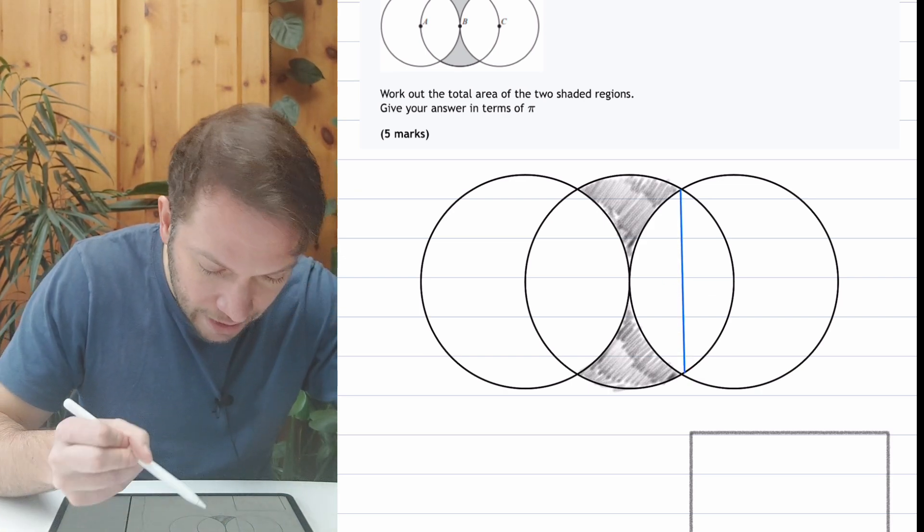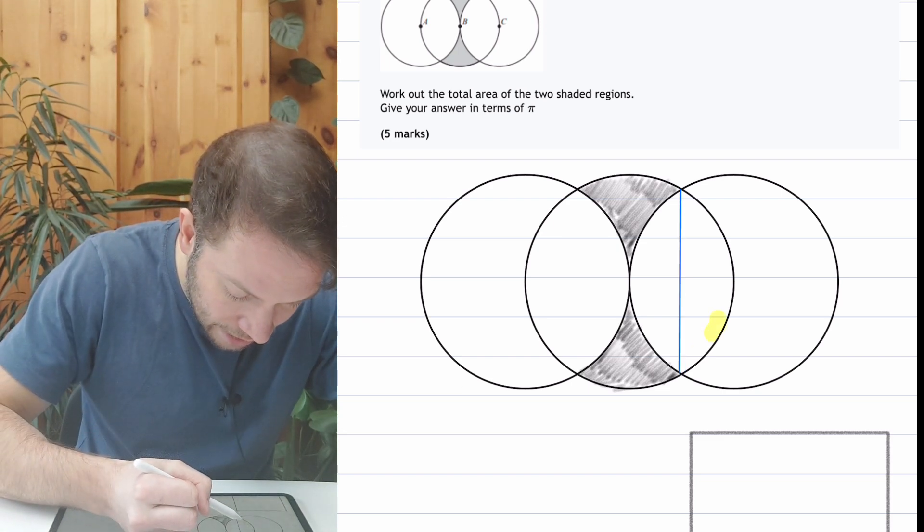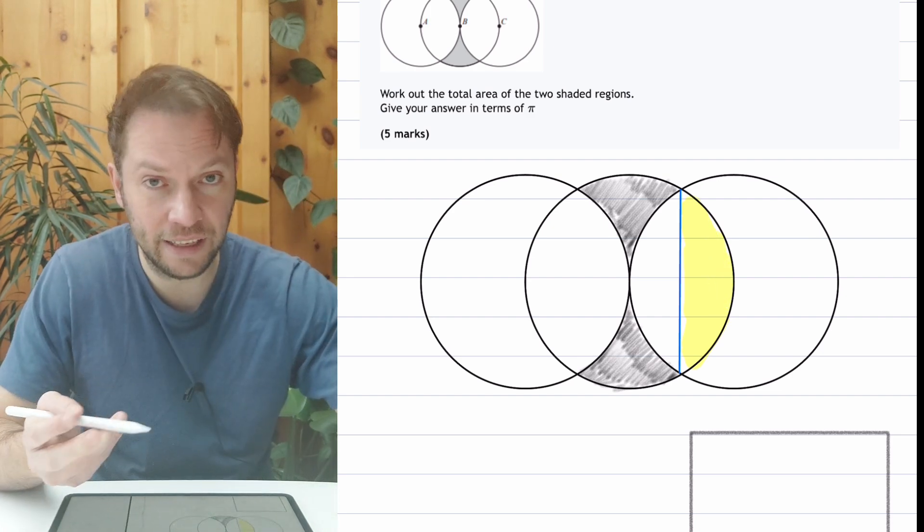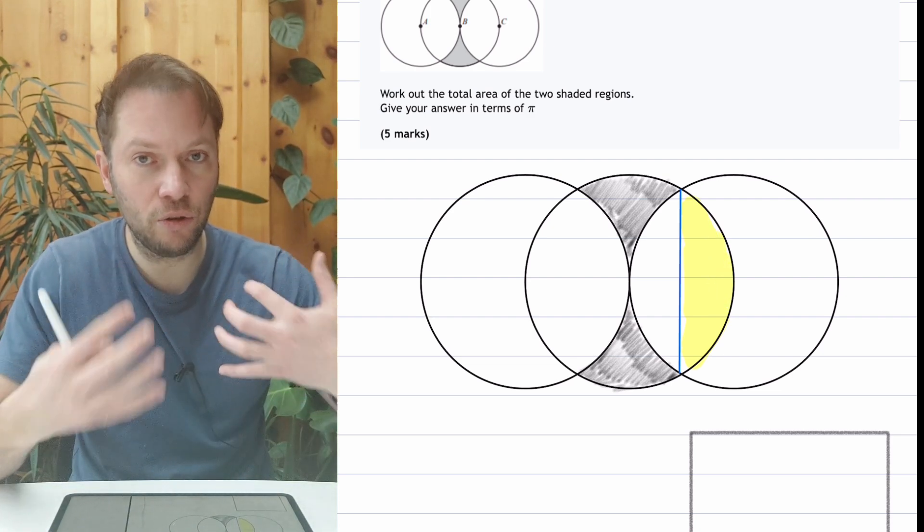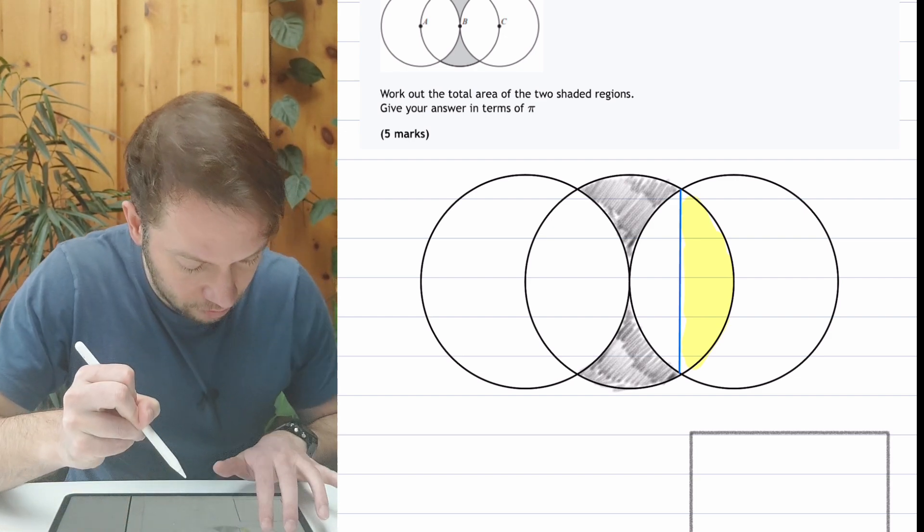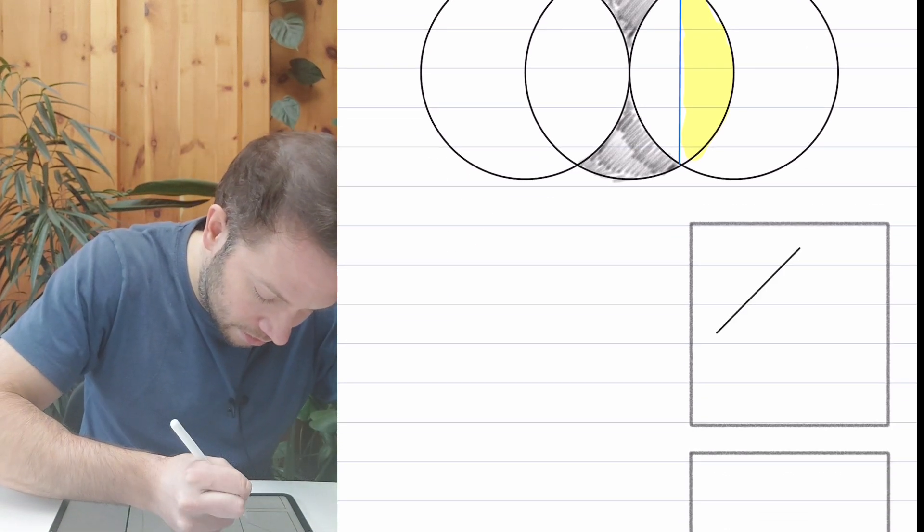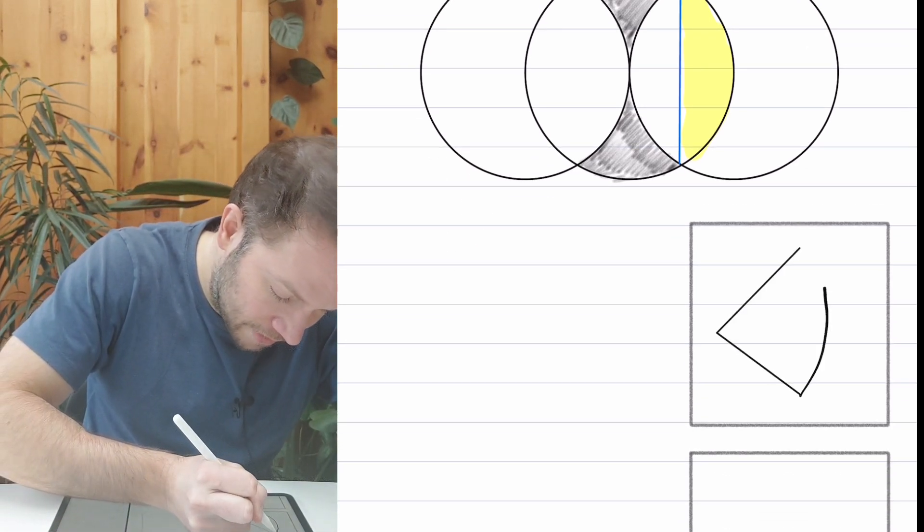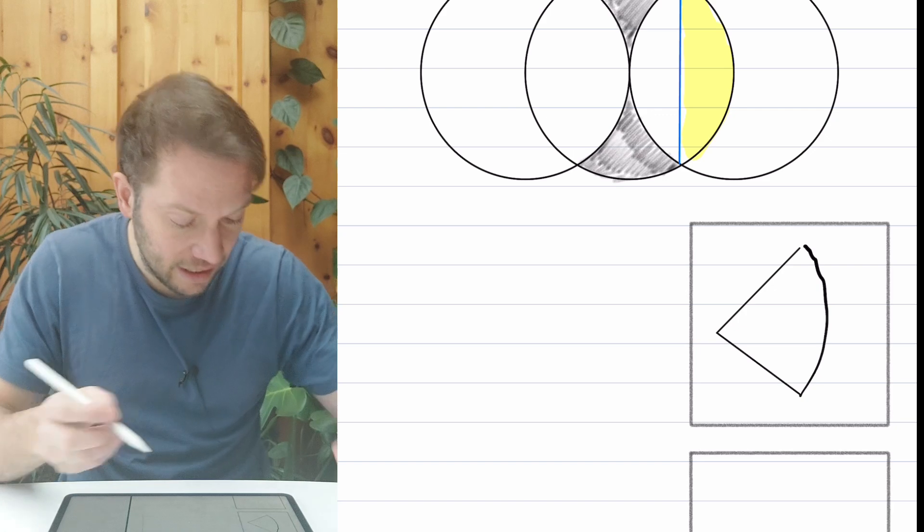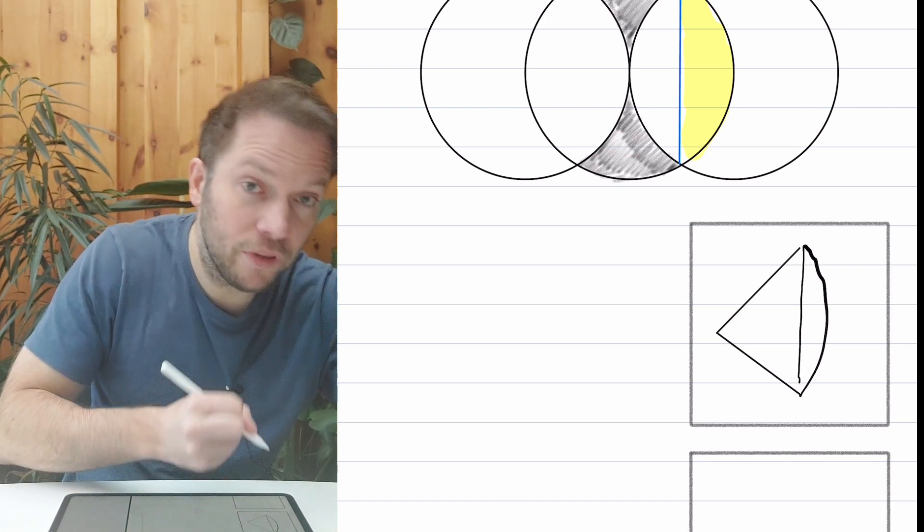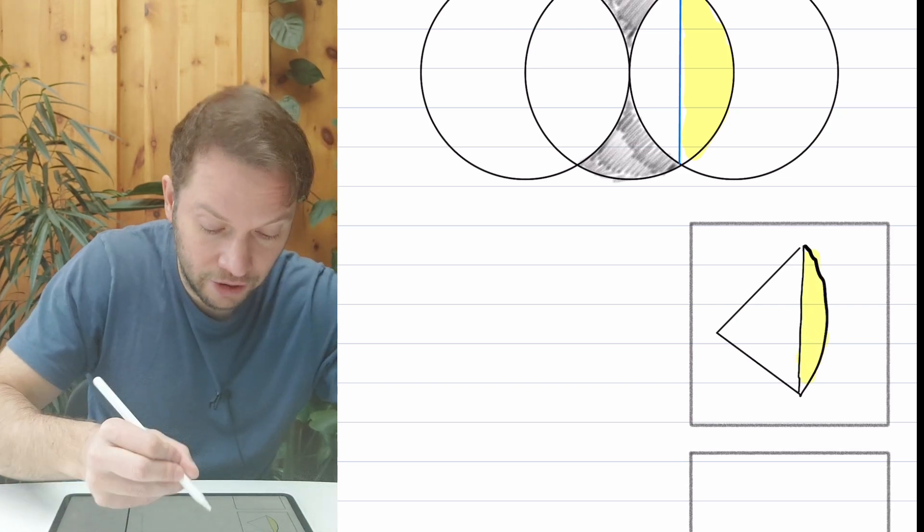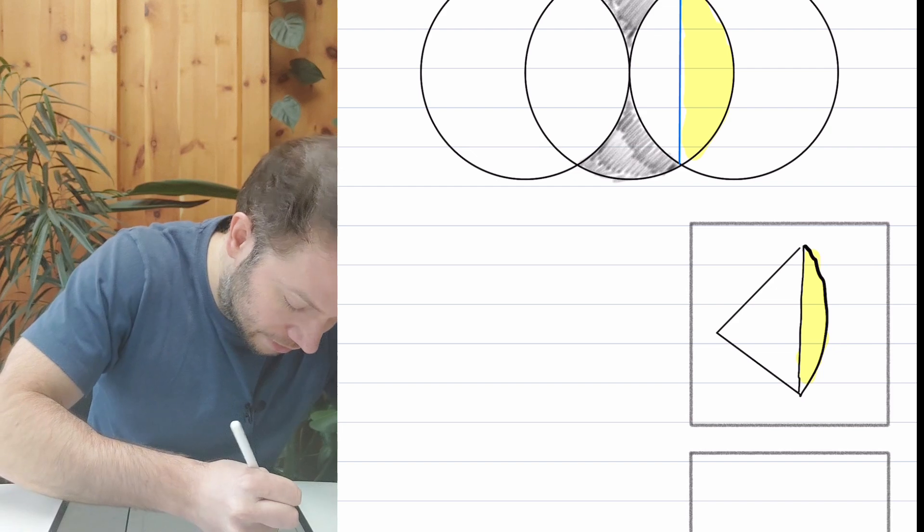So I'm going to add a line like this. And then the area here, just half of this leafy region on the right, is known as a segment. And that is a shape that you do cover in GCSE about how to find the area of. Let's explore the formula for that. If we start with a slice of a circle, like a pizza slice if you like, it's known as a sector. And then we cut out the triangle on the left, we're left with this region on the right, which is known as a segment.